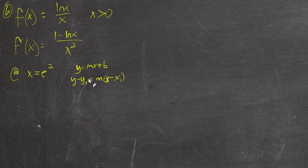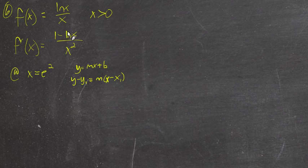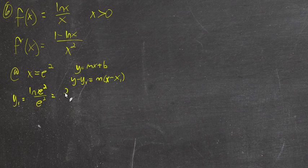All we need to know to fill this in is one point on the tangent line and the slope of the tangent line. They tell us that x is e squared, and since the tangent line is touching this graph, the y value would be the y value on the graph at e squared. So y1 equals the natural log of e squared over e squared. The natural log of e squared is 2, and that's over e squared, so y is 2 over e squared.